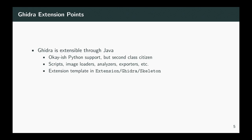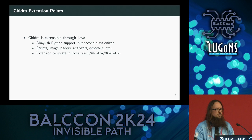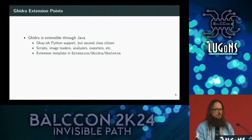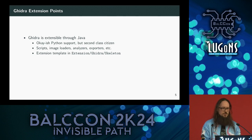When we look at how we can extend Ghidra, there is Python scripting support, but it's kind of a second-class citizen because it's only Jython — a Java interpreter of Python. There are several projects that try to integrate modern Python support into Ghidra, like Ghidra Bridge — you should check them out. Mostly I'm sticking to Java because that is the main supported thing. You can write scripts, image loaders, analyzers, and exporters. Pretty much everything you see in the UI you can customize with an extension, and you can find the skeleton for extension development under extension/Ghidra/skeleton.